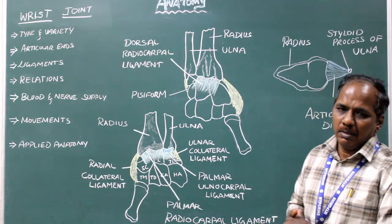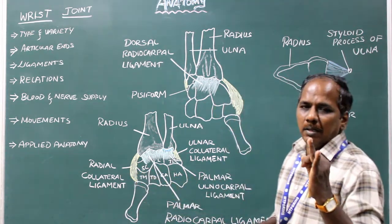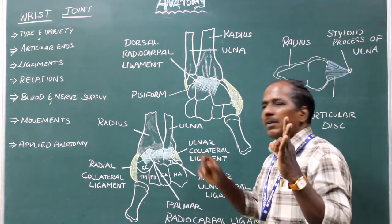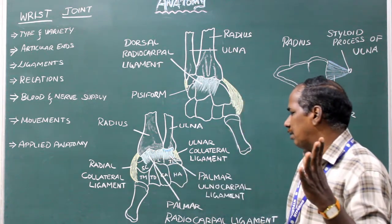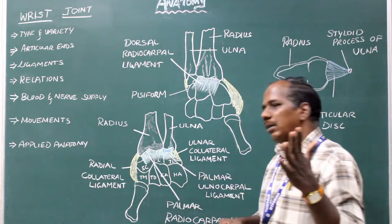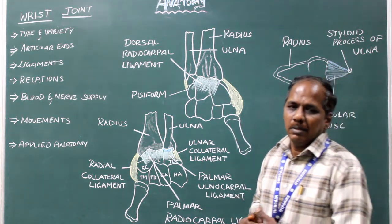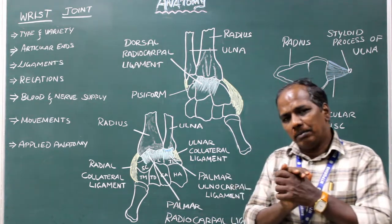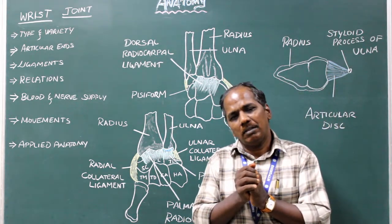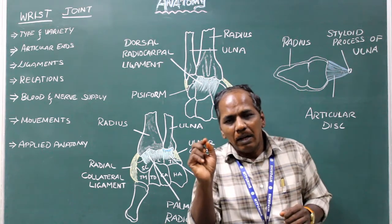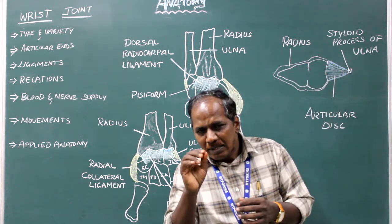Ligaments. Number 1: Capsule. It is a loose fibrous sac which encloses the joint cavity. It is attached to the margins of the articular ends. Its inner surface is lined by synovial membrane.